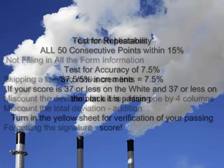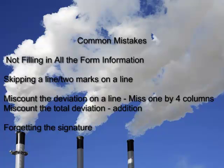Some common mistakes you will want to avoid: not filling in all the form information — this can cause document traceability problems; skipping a line or putting two marks on a line — check before you separate your white sheet from the yellow, and many people find a straight edge helpful during the test, such as a ruler or rubber band; miscounting the deviation — if you marked 3 columns off but it was 4, we will catch that in verification, but if you marked 4 and it was 3, we are likely never to grade your sheet; miscounting the total deviation — when above 30 we check carefully, and on more than one occasion I have found the total to add to 38 when it was actually only 37; and finally, forgetting the signature — if you don't verify that these answers are yours, neither can we.